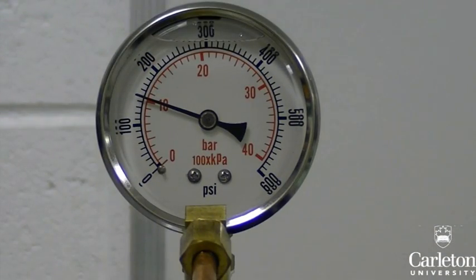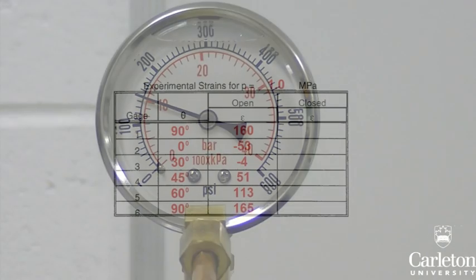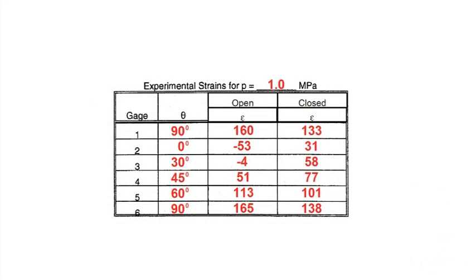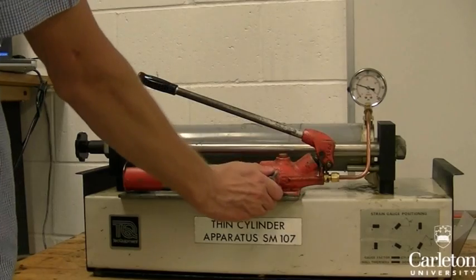Close the valve and apply an internal pressure of 1.0 megapascals. Record the strain from all six gauges. Then open the valve to release the pressure.